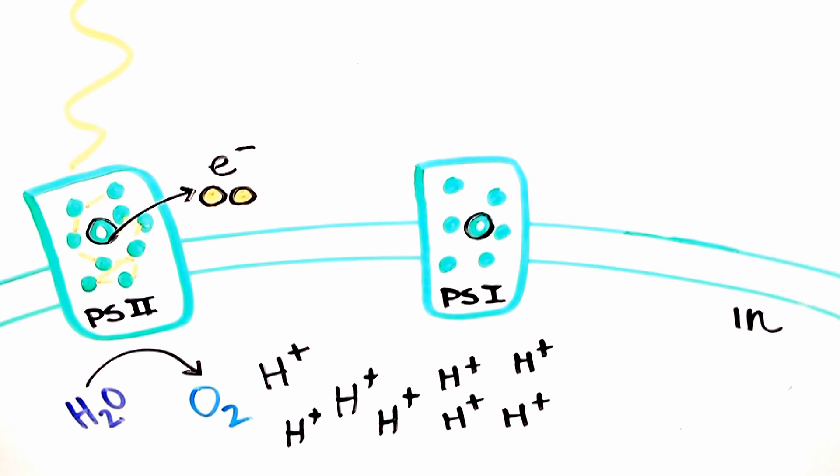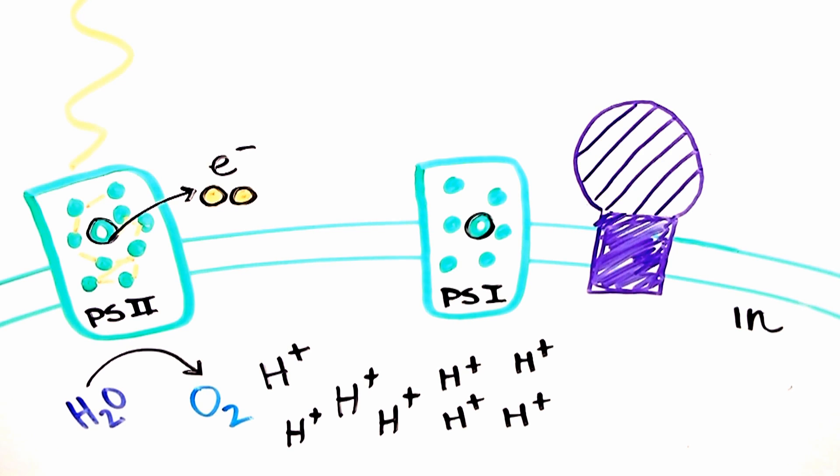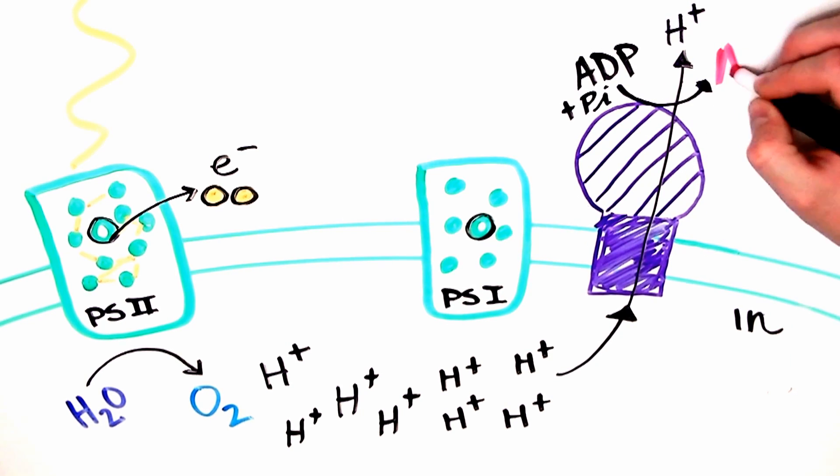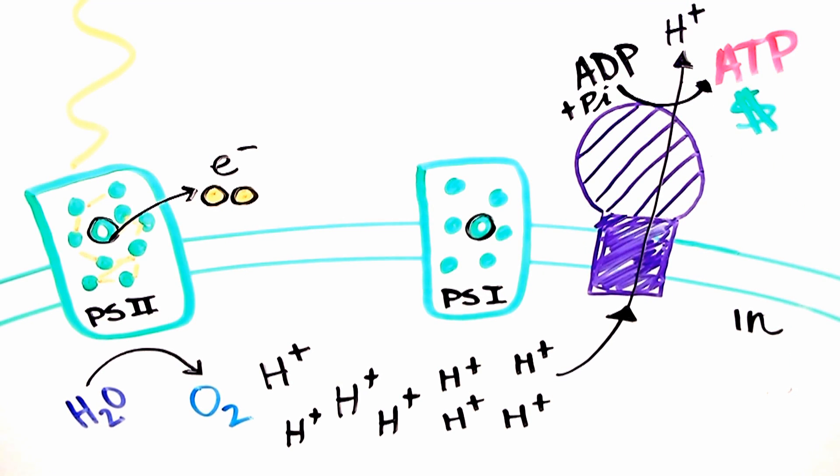Because the protons on the inside will be in a higher concentration than outside, they will naturally diffuse out, passing through a molecular machine called ATP synthase which converts ADP into ATP, the energy currency of the cell.